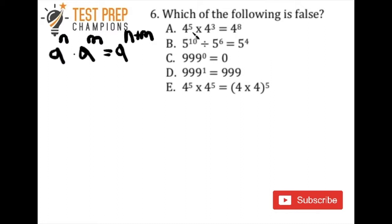So we've got 4 raised to the 5th power times 4 to the 3rd power. Can we rewrite that as 4 to the 8th power? Yes, we can, because we could write this as 4 raised to the 5 plus 3, and 5 plus 3 equals 8. So a is correct. So let me cross that off because a is not false, a is true.